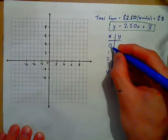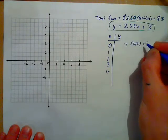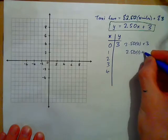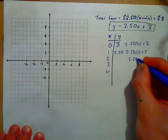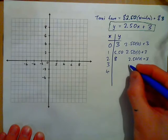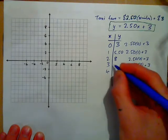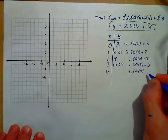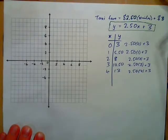If I go zero miles, it'll be $2.50 times zero plus three — $3.00. If I go one mile, that's $2.50 times one plus three — $5.50 for one mile. If I go two miles, that's $2.50 times two plus three — $8.00. If I go three miles, $2.50 times three plus three — that's $7.50 and three — $10.50. If I go four miles, $2.50 times four is $10.00 plus three — that's $13.00 for four miles.